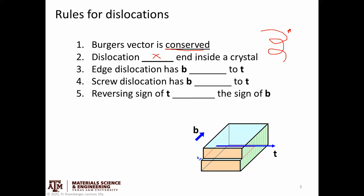They could end at some other kind of defect or at the edge of a crystal — as in that video, where we saw something starting at the bottom and ending at the top. But they can't just terminate within a crystal lattice. For edge dislocations, the Burgers vector B is perpendicular to the direction of the dislocation itself.